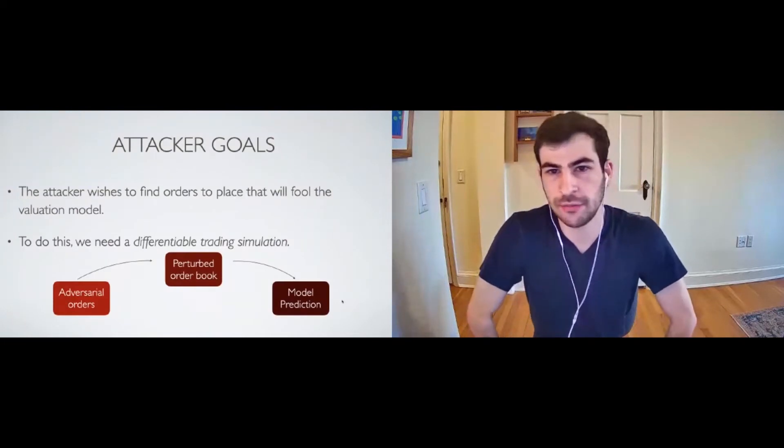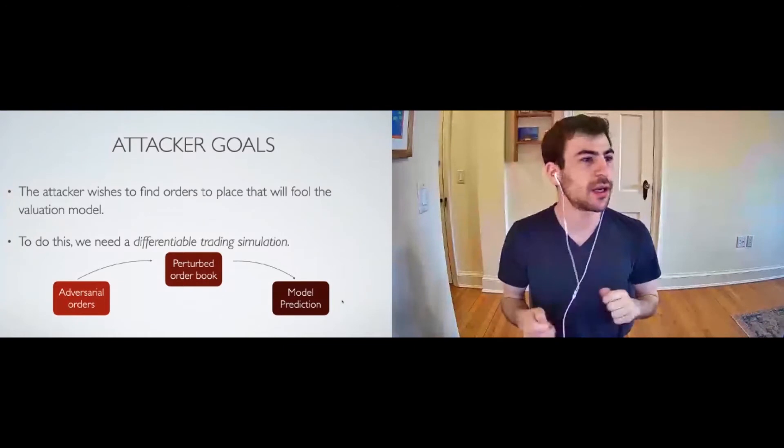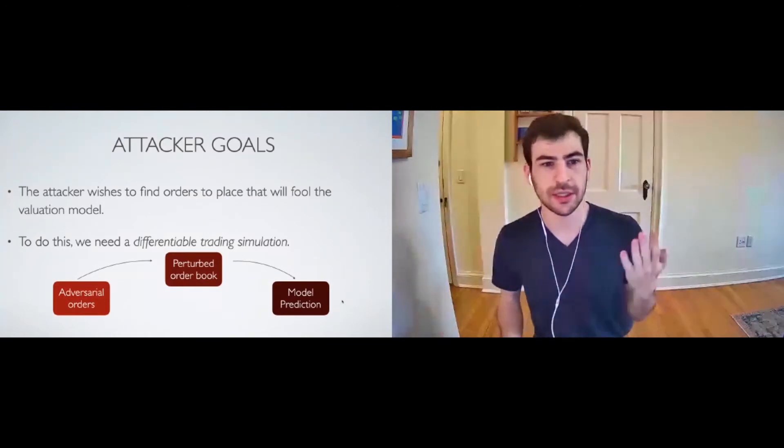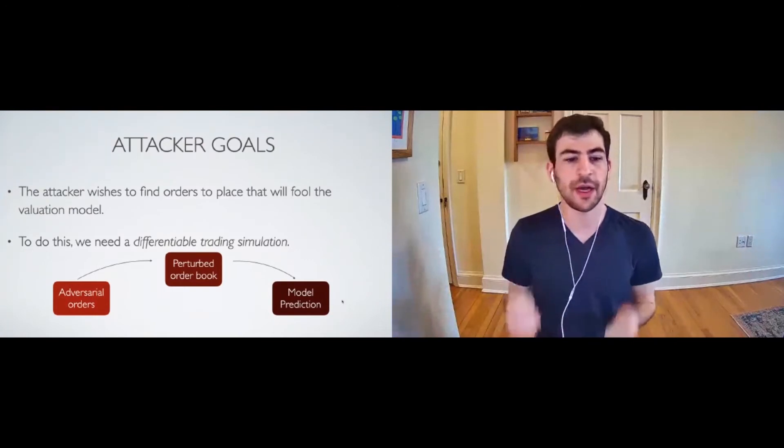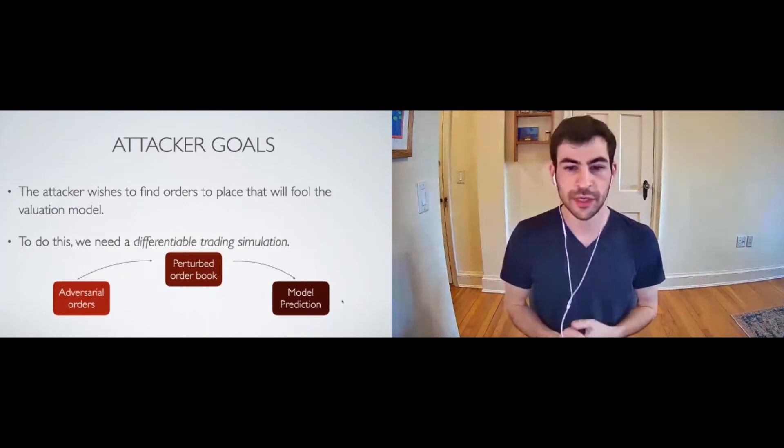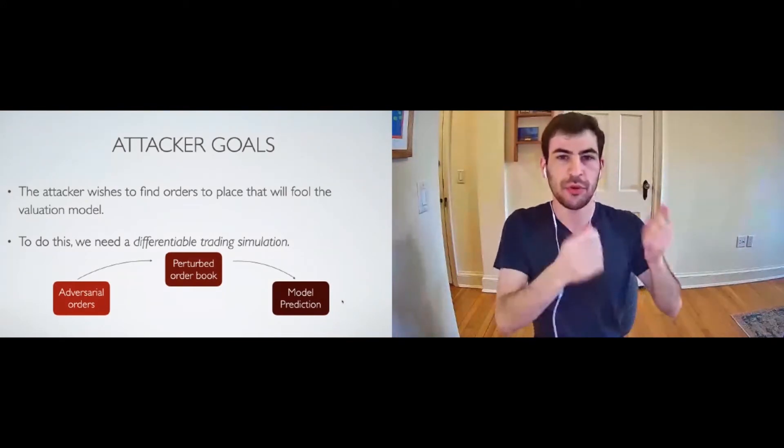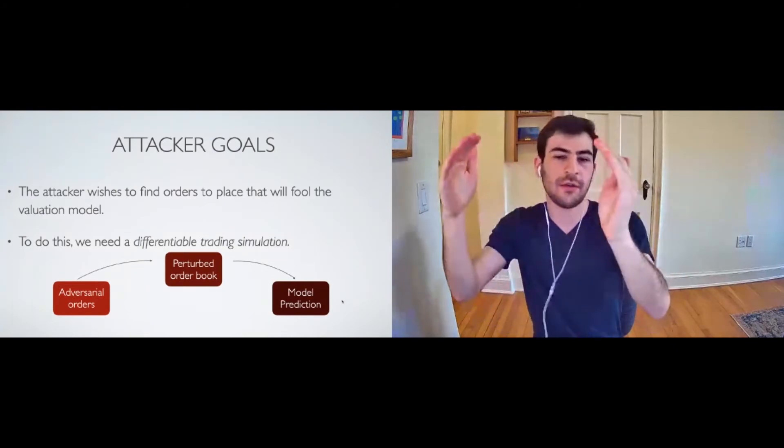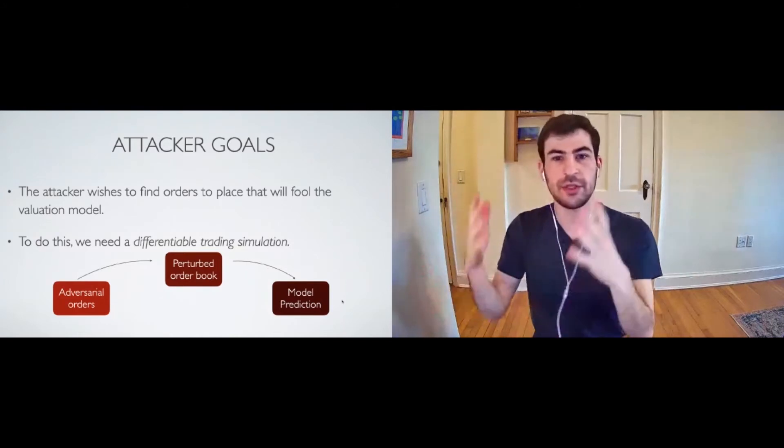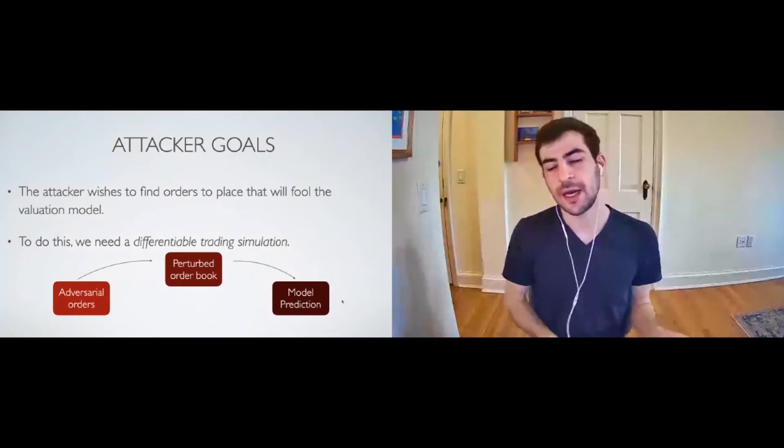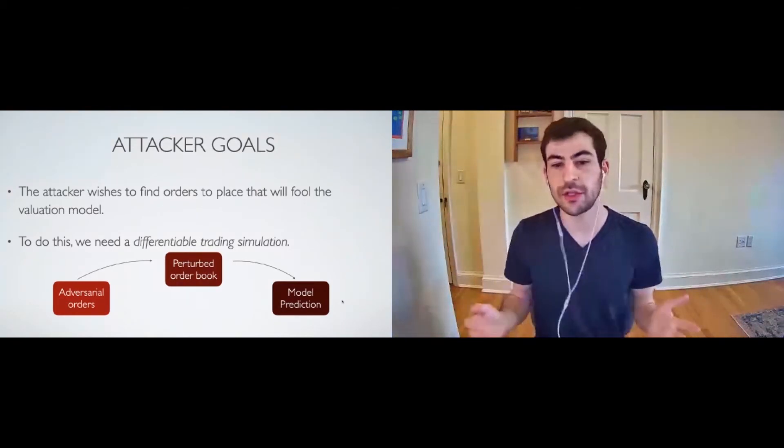The attacker's goals can then be formalized. The attacker wishes to find orders to place that will fool the valuation model. So the attacker is not inserting data in this pipeline at any unrealistic stage. The attacker is an agent in the market, and as such, they can place orders to buy or sell at any price level. And in order to find a set of adversarial orders that accomplishes our goal, we need a differentiable trading simulation. This is one of the contributions of our paper that took a little bit of engineering. We need a way to come up with orders the adversary can place, figure out how they affect the order book downstream, because if you place orders at a particular time, a few seconds later, they're still present in the order book. But where they show up in terms of which price level is dependent on how that order book looks. So we need to propagate these orders, and then we have to feed this into the model, find out its prediction. And in order to improve our adversarial orders at the beginning of this, we have to back propagate through all of that. And so we have a differentiable trading simulation to do this.